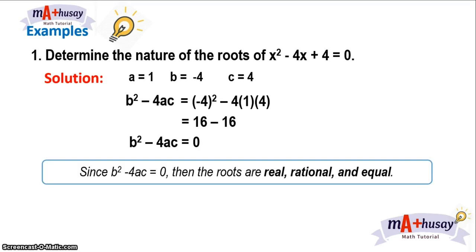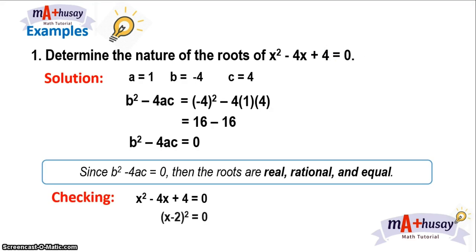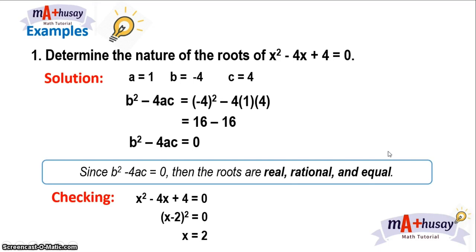We say it's real, rational, and equal by factoring this equation. x² − 4x + 4 = 0 can be factored as (x − 2)² = 0, because it is a perfect square trinomial. So if you solve for x, you get x = 2 — and you have two values which are the same. So the roots are real, rational, and equal. Again, if the discriminant is equal to zero, the nature of the roots is real, rational, and equal.